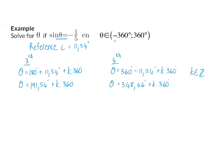In our question, we were given a specific interval, so now we need to go one step further and calculate the specific values for theta that are in this interval. For this, we are going to substitute k with any integer, starting off with k equal to zero, meaning we add no 360 degrees.